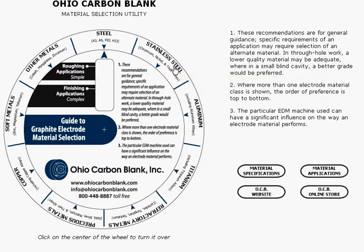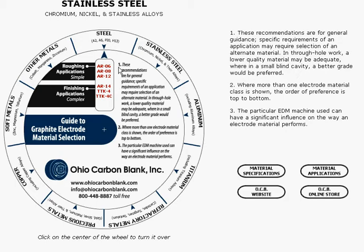It gives you a little more information about those types of materials. Now click on it. You'll see that there are six different grades of graphite that can be used. According to this wheel, AR6, AR8, and AR12 are the recommended grades for simple and or roughing applications.